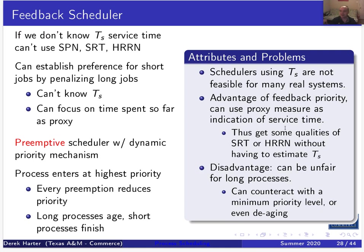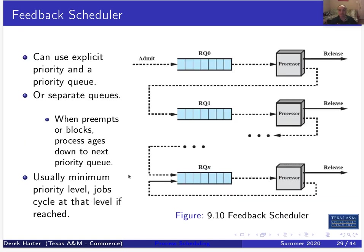Feedback schedulers in their pure form can disadvantage long processes, but it's easy to counteract that with de-aging mechanisms — if a process has been waiting too long, its priority starts rising again instead of lowering. The scheduler has different priority queues: level zero, one, two, etc. The textbook uses zero for highest priority — so the lowest number is the highest priority, though some systems do it the other way.